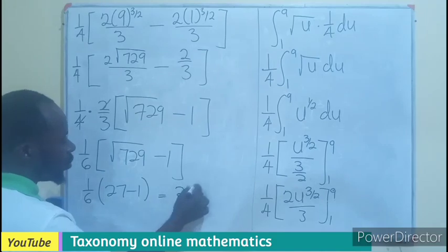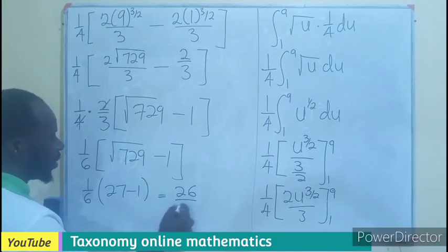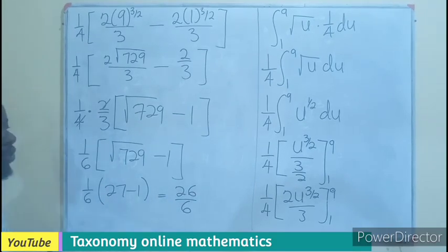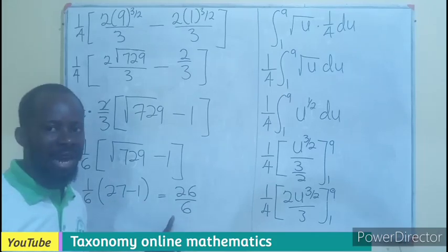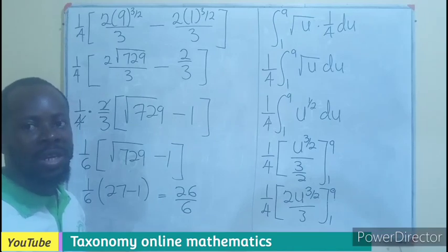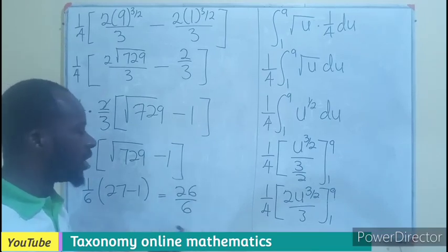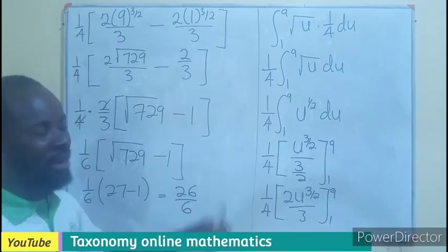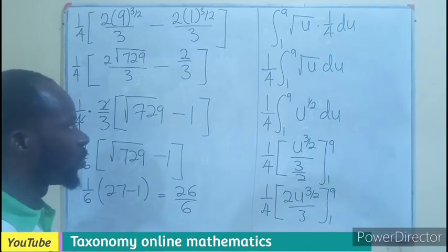So, we have 26 dividing 6. So, this will be the integral value of what we are asked to integrate. We can still convert this to become decimal, 4.13 to a number of decimal places.